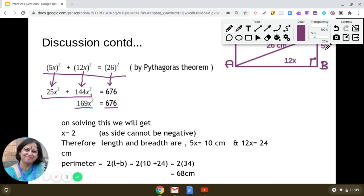So what will be the sides now? The breadth will be 5x equal to 5 into 2 that is 10 centimeter and the length will be 12x. So 12 into 2 that is 24 centimeter.